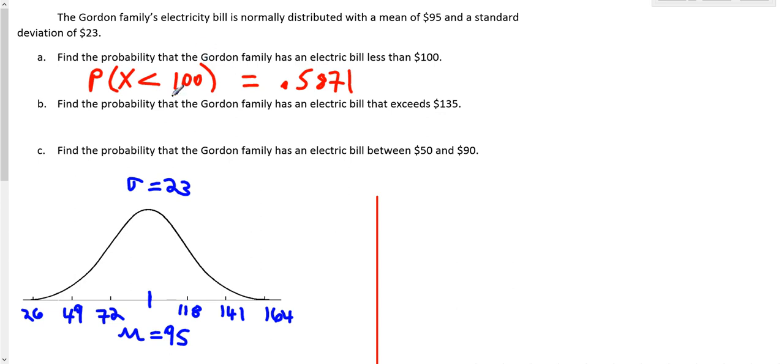Find the probability. We already answered this question that x is less than 100. Now we're going to find the probability that the Gordon family has an electric bill that exceeds 135. So no longer we're doing less than, which is to the left. We're trying to exceed, or look to the right, for the area to the right of 135.